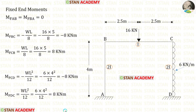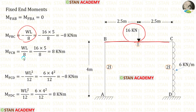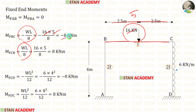Now let us find the fixed end moments. In column AB, there is no load, so the fixed end moments M_AB and M_BA are 0. In beam BC, we have a point load acting at the center. The formulas to find the fixed end moments are minus WL/8 and positive WL/8. Here W is 16 and L is 5. After the calculation, for M_BC we get minus 8 and for M_CB we get 8.